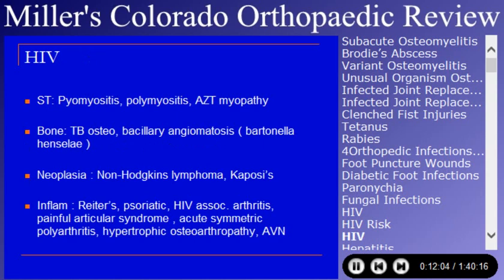There are other entities associated with HIV that haven't shown up on in-training exams yet, but are likely to appear given recent literature in the Journal of the American Academy of Orthopedic Surgeons. They include soft tissue infections, pyomyositis — which can be tricky because of AZT myopathy — osteomyelitis, and bacillary angiomatosis associated with Bartonella. Non-Hodgkin's lymphomas and Kaposi's sarcomas are also associated.